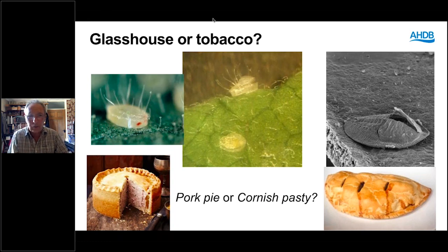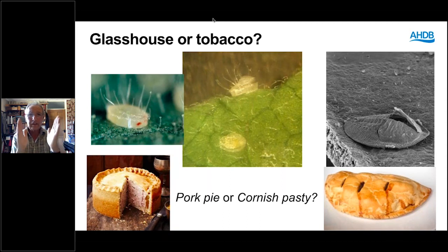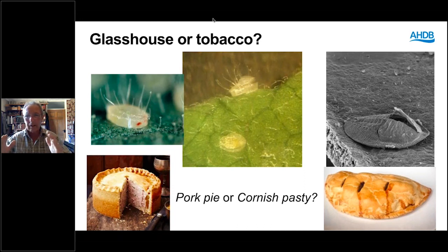If you can find the pupal stages of the whitefly it makes it much easier to identify the species. The glasshouse whitefly mature pupa looks like a pork pie — straight sides. The Bemisia is more dome-shaped, like a Cornish pasty — completely flat over the body. These are empty pupae where the adult whitefly has already emerged.